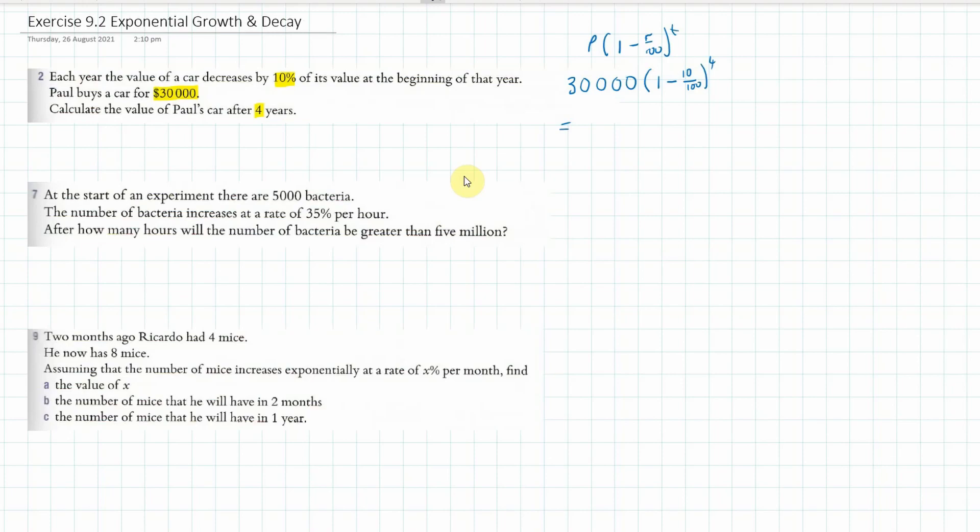Okay so that's going to be 30,000 times 0.9 because 1 take away 10 over 100 is 0.9 to the power of... oh wait not seven, it's four. Read the question.